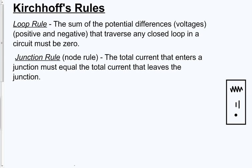First off, you can use these rules in whatever order you need. The loop rule says that the sum of all potential differences that travels any closed loop in a circuit must be zero. Potential differences are the same thing as voltage. Those can be positive and negative values. If you go across a battery in the direction the current is moving, it bumps up the voltage positively, versus going from positive to negative end against current flow, which would be a voltage drop. The loop rule says that within any closed loop, your voltage total has to be zero.